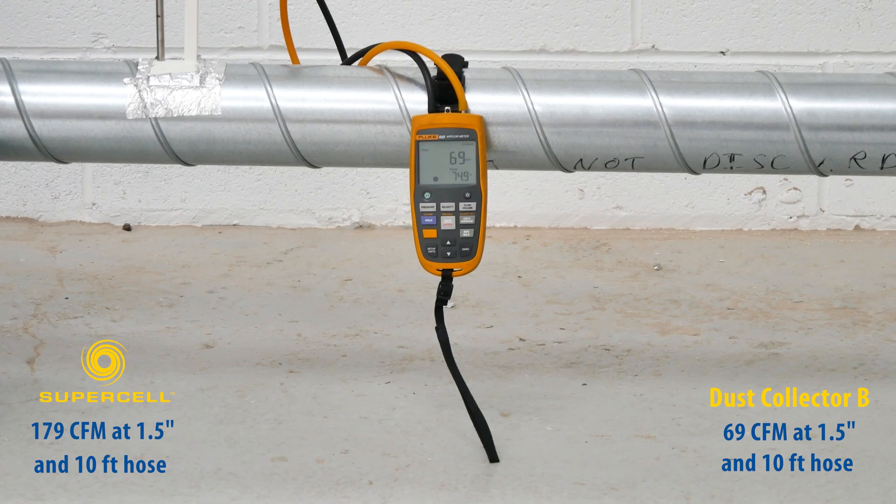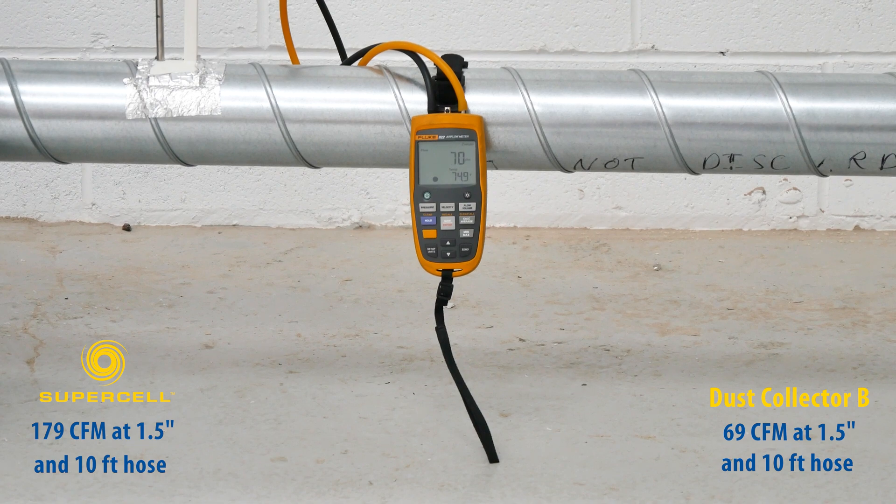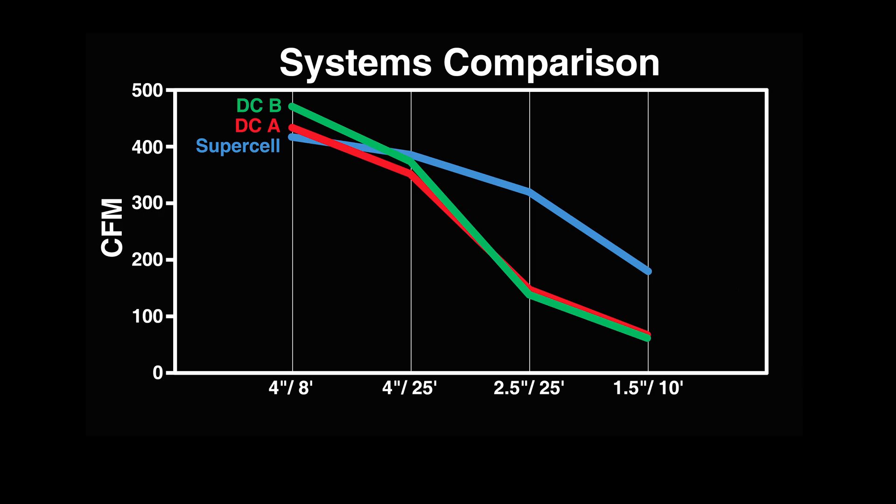Once again, less than half the Supercell's airflow through both setups with a reduced hose diameter. Neither low-pressure collector is able to overcome the resistance created by 2.5-inch and smaller hose diameter, while the Supercell still operates efficiently.